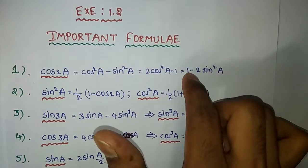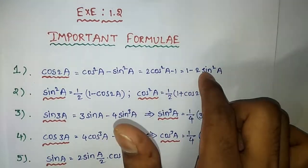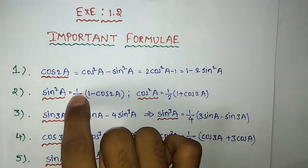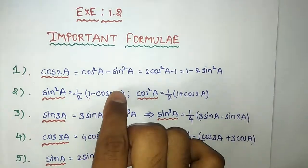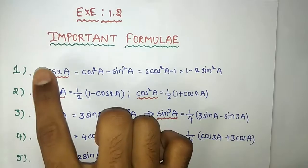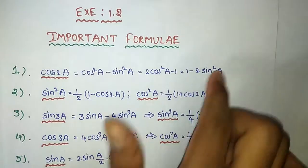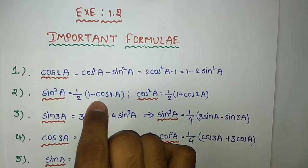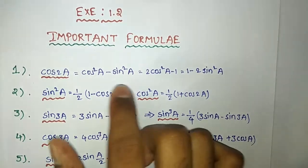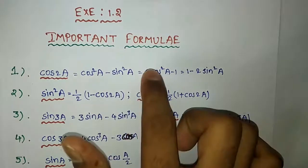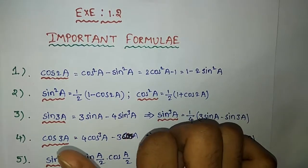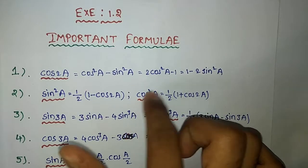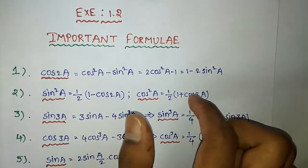cos2a is equal to 1 minus 2sin²a. So sin²a value is 1/2 into (1 minus cos2a). Similarly, cos2a equals 2cos²a minus 1, so cos²a is equal to 1/2 into (1 plus cos2a).